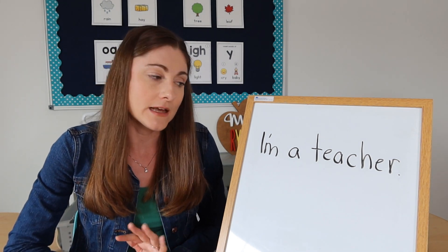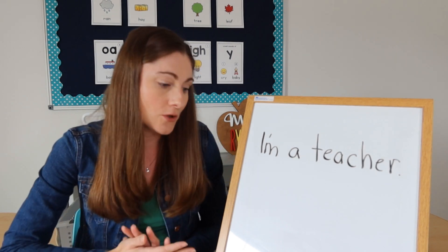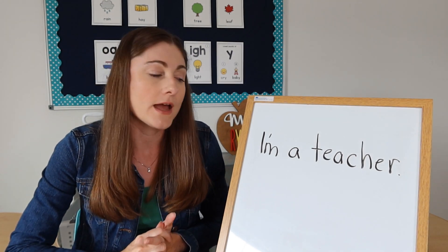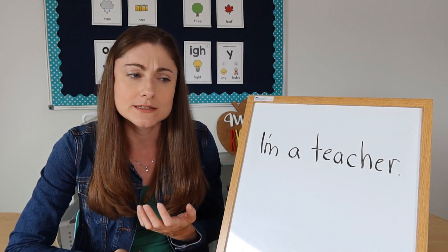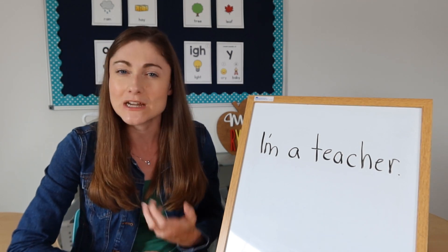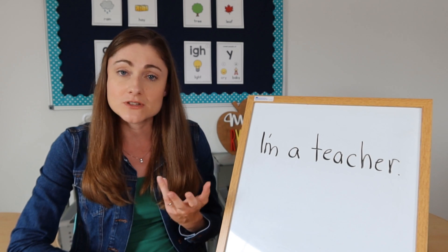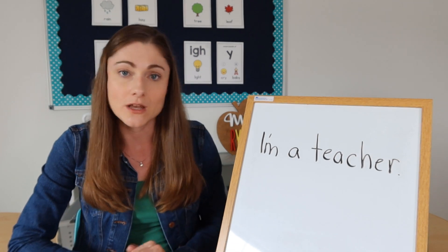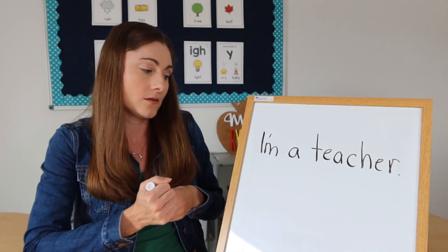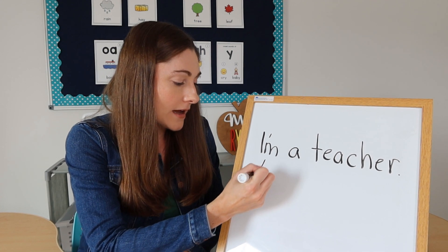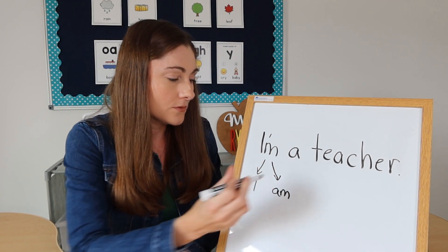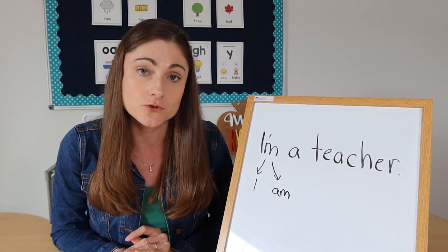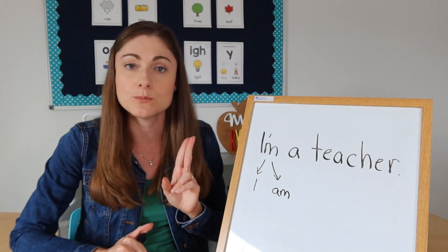The way I would start this lesson is I would have at least one sentence, possibly two, and I would read it to the kids. I might ask a question like, 'Is there a word that seems different from the other words?' or 'What punctuation marks do you notice?' Or I might just get right to the point and say, 'Did you notice this little apostrophe here? This is a contraction.' 'I'm' — what that actually means is 'I am.' So 'I am a teacher' is the same thing as saying 'I'm a teacher.' A contraction is a shorter way of saying something, usually putting two words together.